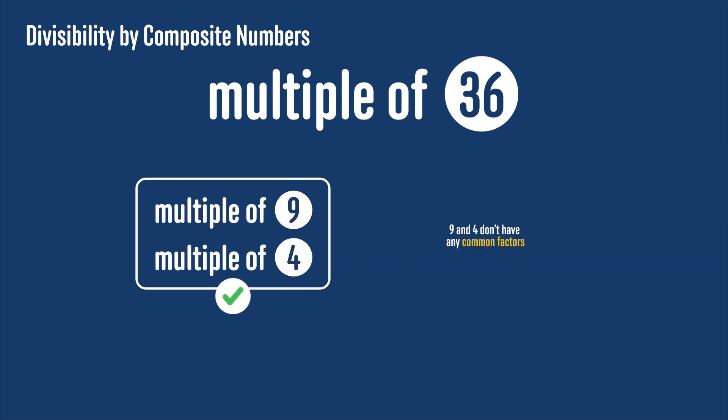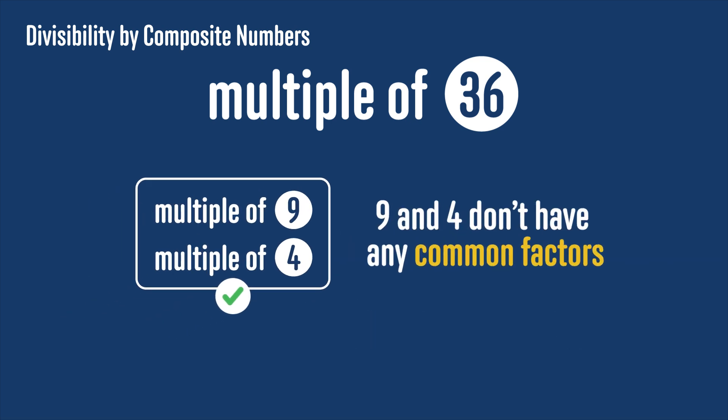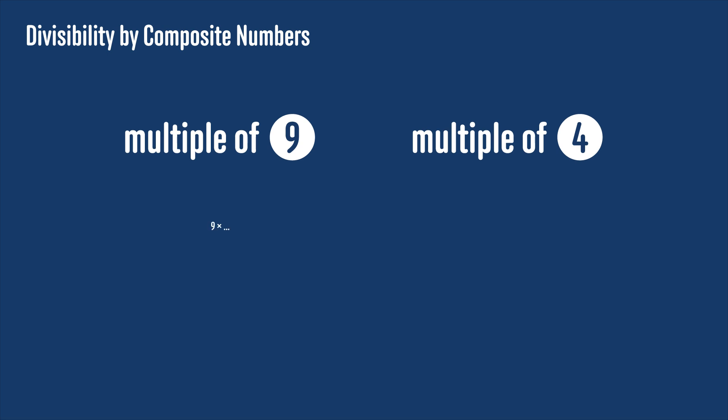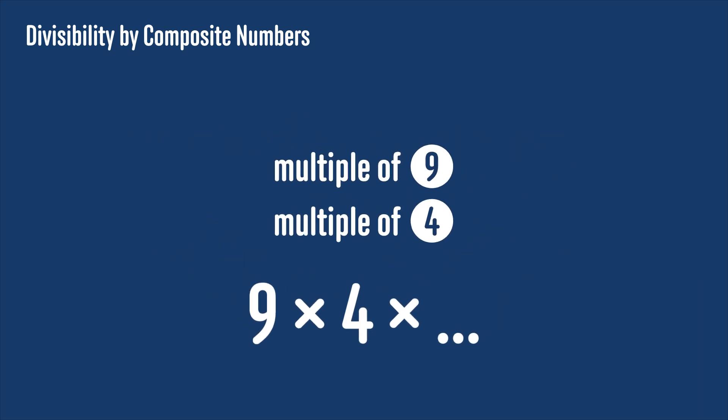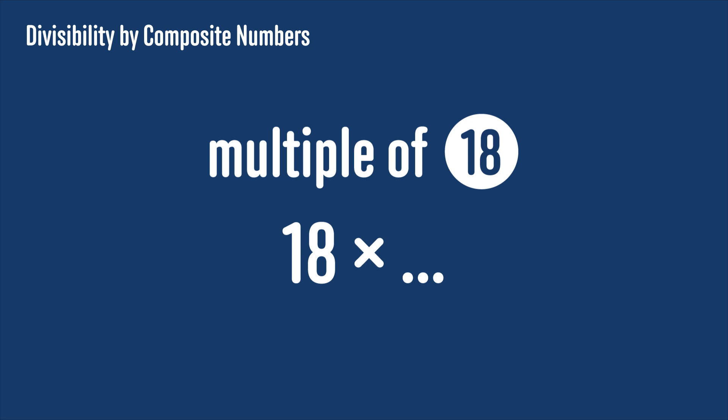Well, it works for 9 and 4 because they don't have any common factors. If a number is a multiple of 9, it must be 9 times some other factors. If it's a multiple of 4, it must be 4 times some other factors. Since there's no overlap of factors between 4 and 9, the number must be 4 times 9 times something else, so it must be a multiple of 36. But if we know that a number is a multiple of 18, then it's 18 times something, and so we automatically know it's a multiple of 2 already. Adding that it's a multiple of 2 doesn't give us anything extra.